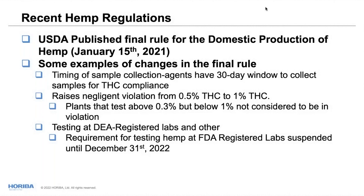In 2021, the USDA made changes mainly for growers: sample collection agents were given a 30-day window to collect compliance samples; the negligent violation threshold was raised from 0.5% THC to 1% THC, which helps because plants grown in different sunlight conditions can vary. DEA-registered lab testing requirements were pushed to 2022, with allowance for FDA-qualified labs of different types.